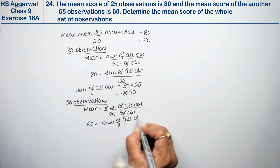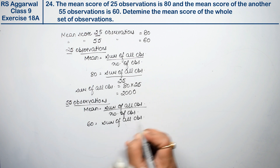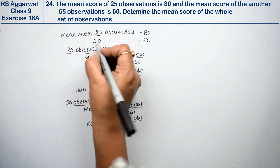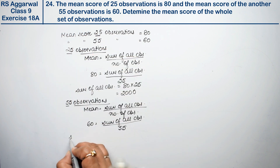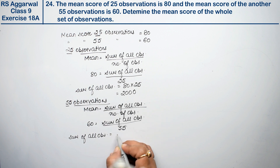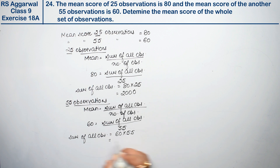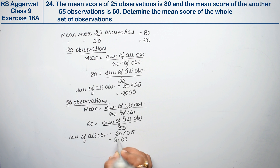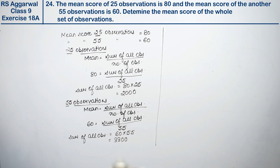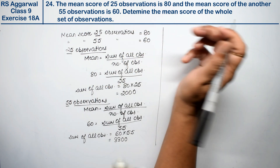For the second group: mean is 60, equals sum of all observations divided by 55. So sum of all observations equals 60 times 55, which gives us 3300.